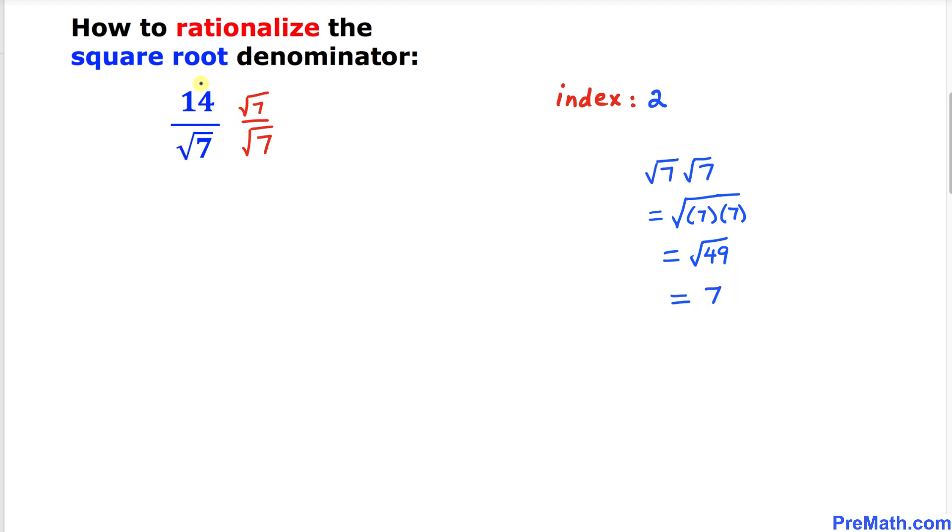At the numerator we got 14 times square root of 7 divided by 7. Now this 7 goes into 14 two times, so we got a simplified answer of 2 times square root of 7.